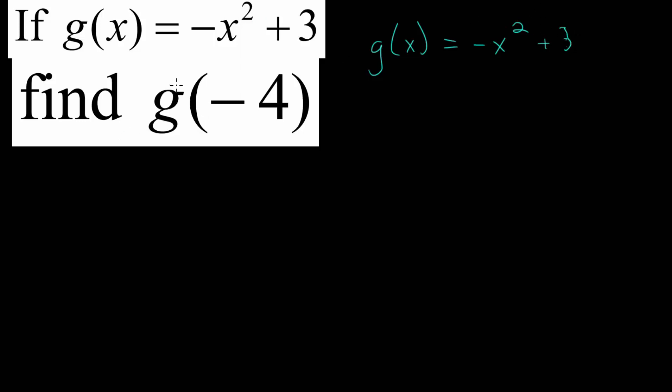When evaluating functions, we need to find g of minus 4. Notice that in the general function, we replace this x with negative 4. And that's all this notation means, is we want to evaluate this particular equation at a very specific x value.